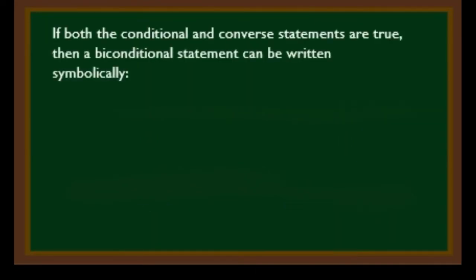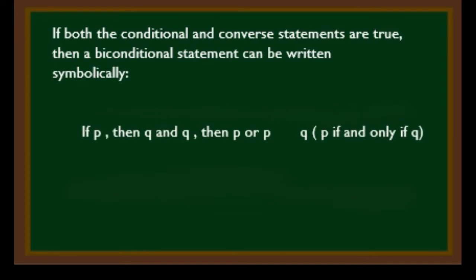If both the conditional and converse statements are true, then a biconditional statement can be written symbolically as: if P then Q, and Q then P — or P if and only if Q. For a biconditional statement, we use a double arrow, since the truth works in both directions.